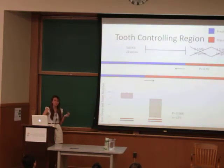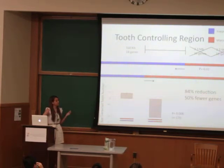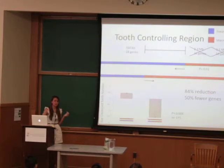Overall, these two recombination experiments led to an 84% reduction in the tooth-controlling region, and reduced the number of genes in that region by 50%.